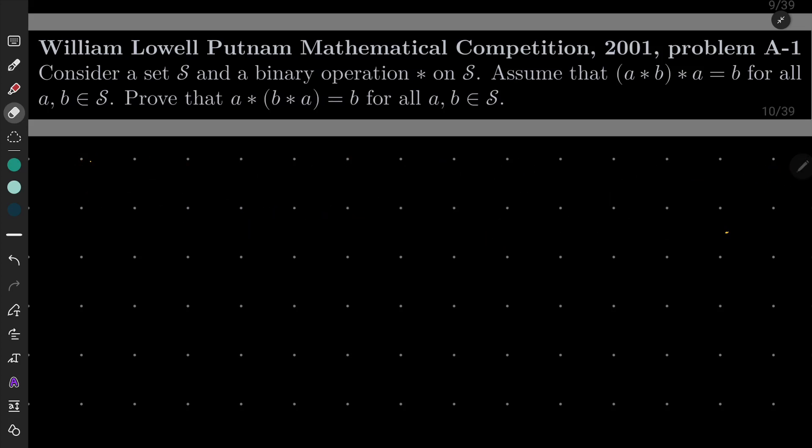Okay, so here is my solution. By assumption, as I stated, b star a star b equals a for every a and b. Yes, I took my assumption and I have just exchanged a and b. I can do it because a and b are arbitrary.